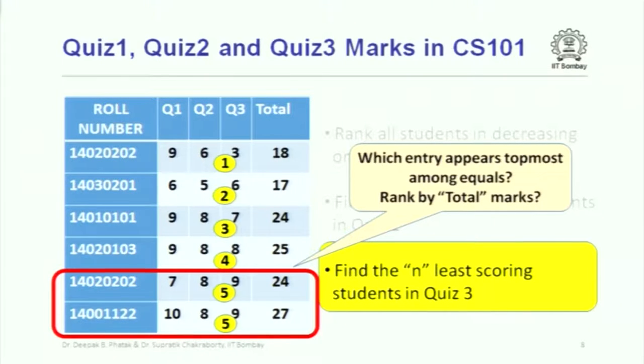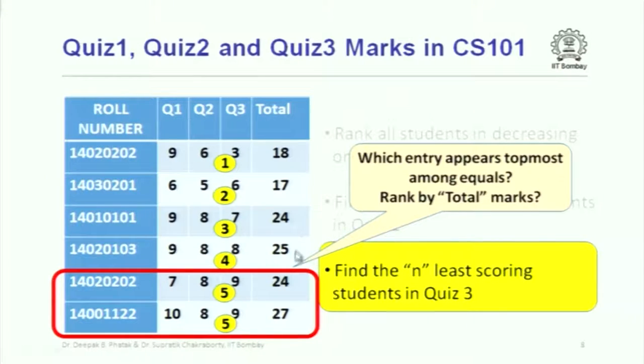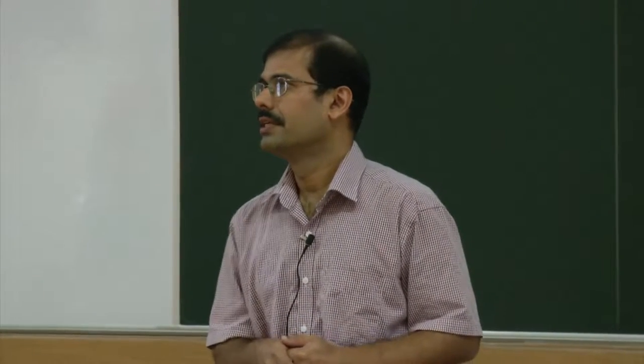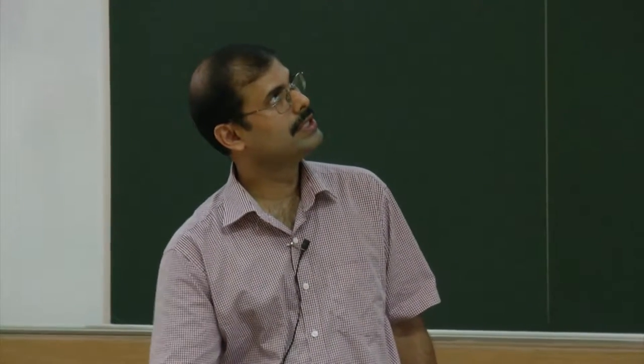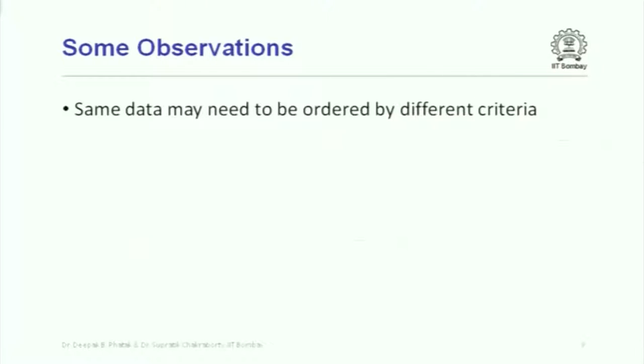The point is that when you are given some data and required to order the data items one after the other, you have to come up with some criterion. This criterion should be such that for any two data items — any two rows in the table — you can say which comes before which. Just saying 'total marks' may not suffice because two students may have the same total marks. You then have to say: look at quiz 1 marks; if those are also the same, look at quiz 2 marks; eventually something must differ, otherwise they are the same data item.